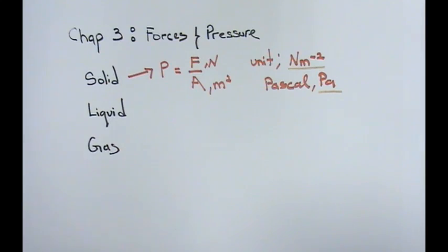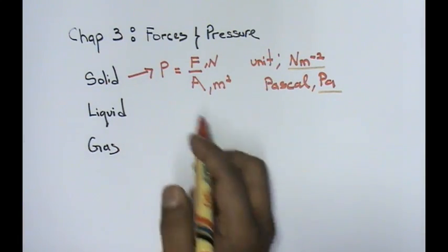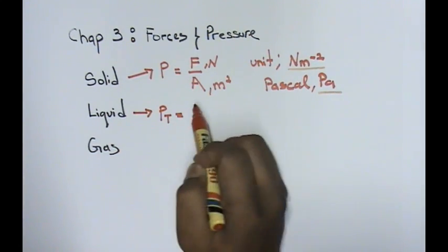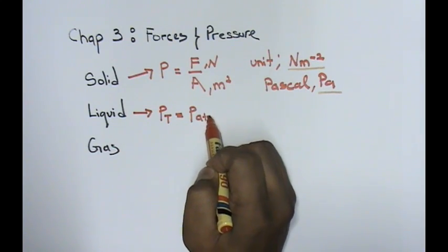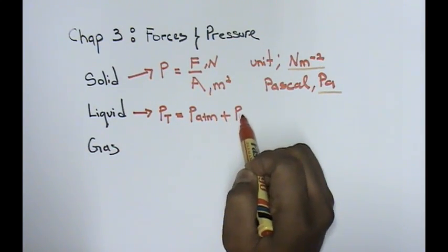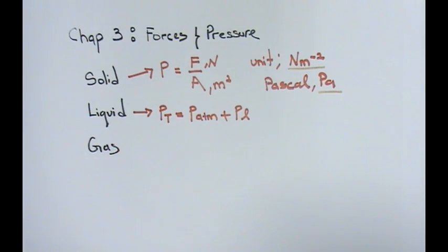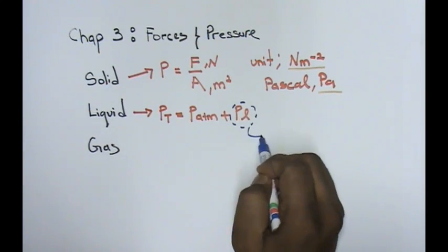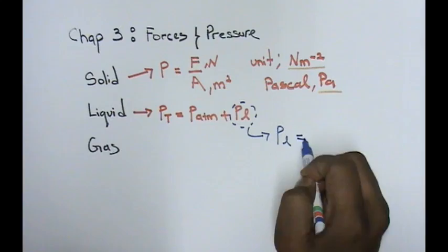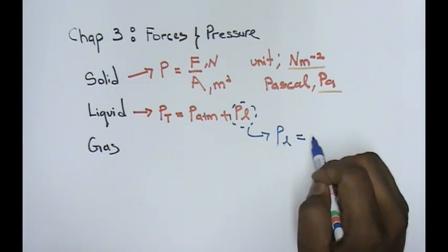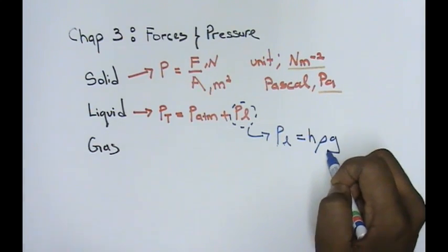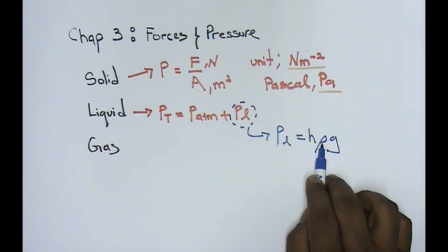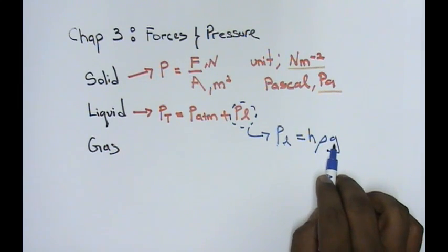For liquid, there are two things that you will discover. The formula for total pressure equals atmospheric pressure plus pressure in a liquid. For the pressure in a liquid, you will learn a formula: pressure in a liquid = H × rho × G, where H stands for height or depth, rho refers to the density of the liquid, and G refers to gravity.